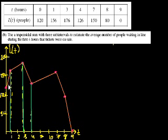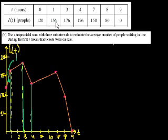What's the area of this first trapezoid? To find the area of a trapezoid, it's the base times the average of the two heights. The base is just 1. The two heights are 120 and 156. The average of 120 and 156 is 276 divided by 2, which is 138. So it's 1 times 138, or just 138. That's the area of that trapezoid.